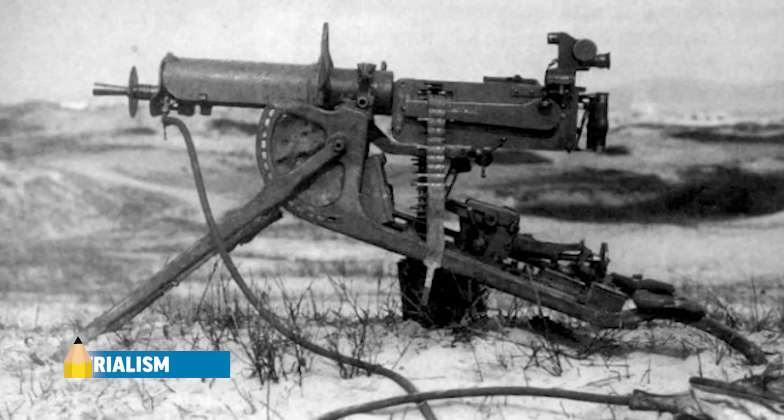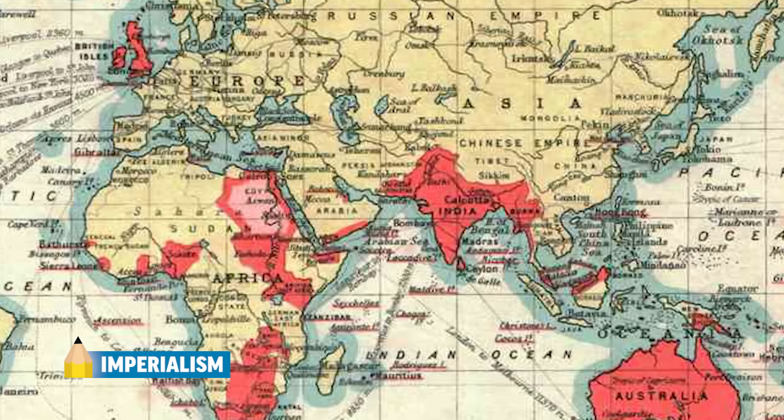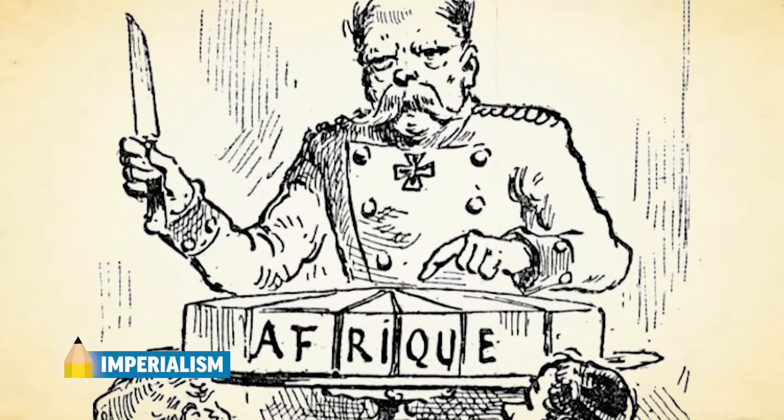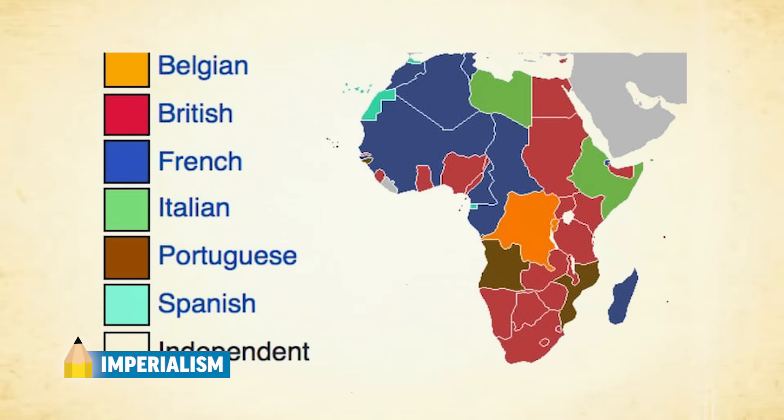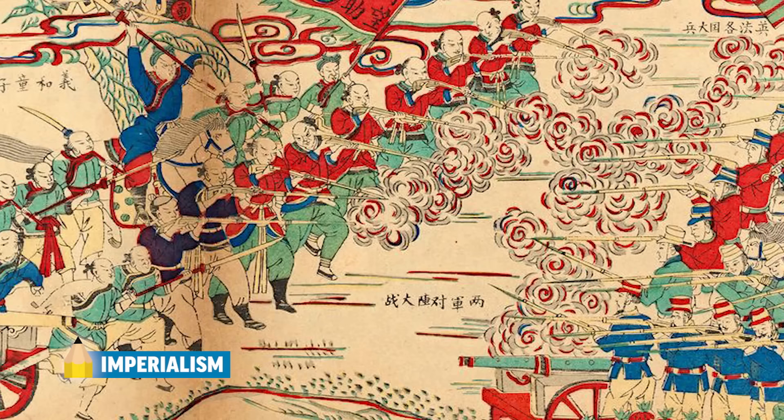Using superior industrialized warfare, weaponry, and newly developed medicine, European countries colonize Africa and Asia. At the Berlin Conference in 1884, King Leopold II of Belgium hosts a gathering of European states in which they look at a map of Africa and, mainly through diplomatic means, agree to its partition. These European leaders neglected the fact that there were thousands of different ethnic groups, language groups, and powerful kingdoms existing in Africa at the time. Many colonized lands fight against their colonizers, like the Sepoy Rebellion in India and the Boxer Rebellion in China.